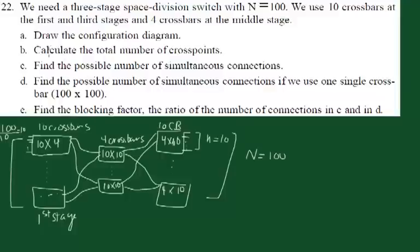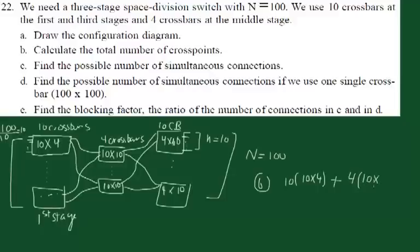Part B asks us to calculate the total number of crosspoints. We have ten crossbars at the first stage, each ten by four — so ten times (ten times four). Plus four crossbars at the middle stage, each ten by ten — so four times (ten times ten). Plus ten crossbars at the last stage, each four by ten — so ten times (four times ten). Adding those three terms gives the total number of crosspoints.